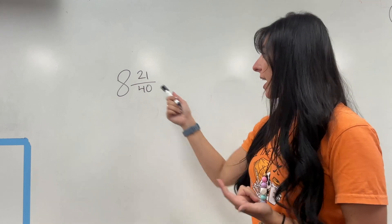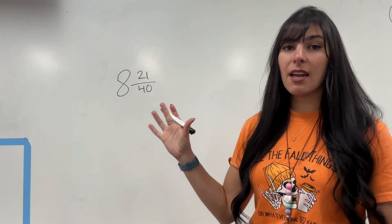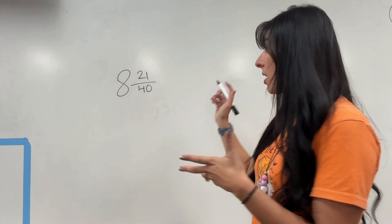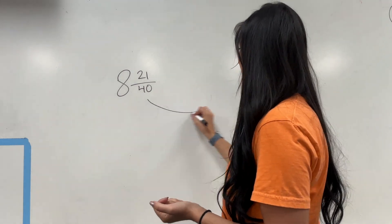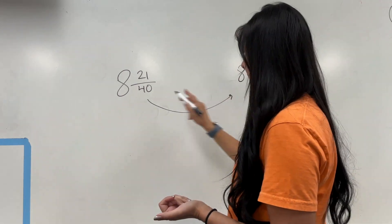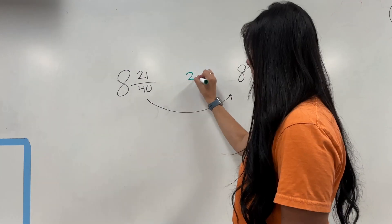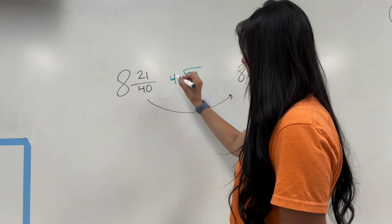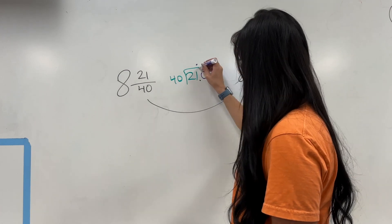Okay, so here's my mixed fraction. I have 8 and 21 over 40. 8 means I have a whole of something. So that is going to transfer over there. Now, I'm still left with this. 1, 2, 1 divided by 40.